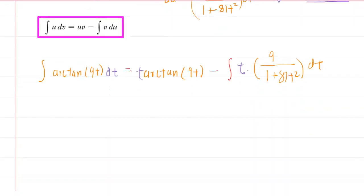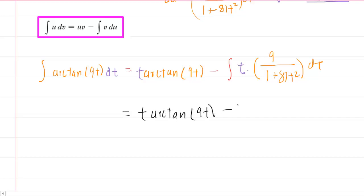But before we evaluate that, why don't we simplify it? We're going to have t arctan of 9t minus the integral. The best way to simplify this, I think, is to factor this 9 to the outside of the integral. Then when you factor out that 9, you have t over the 1 plus 81t squared dt.